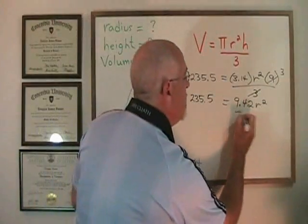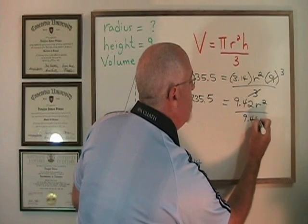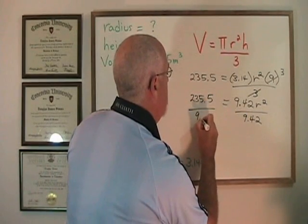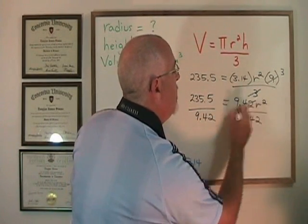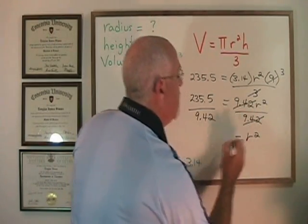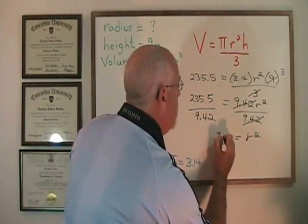It's time to divide both sides by 9.42. These cancel. r squared is isolated and is equal to 25.